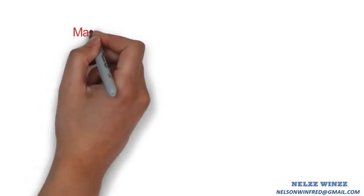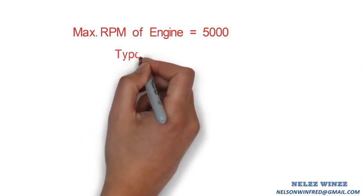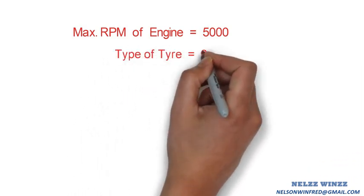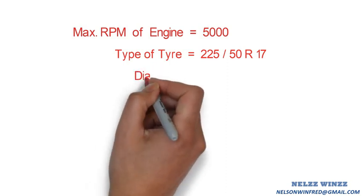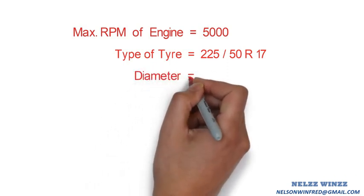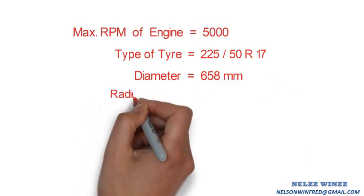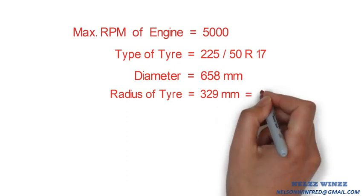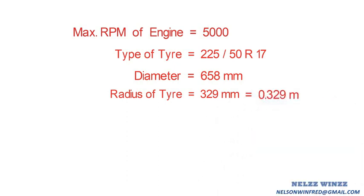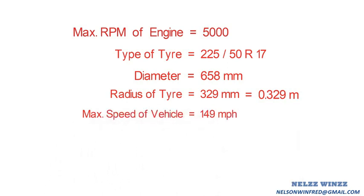The maximum RPM of the engine is 5000. It has 225/50 R17 type tires, which means its tire diameter is 658 mm. If we divide this value by 2 we can get the tire radius, and we need to convert this value to meters. The maximum speed of this vehicle is 149 miles per hour, which is equal to 235 km per hour.